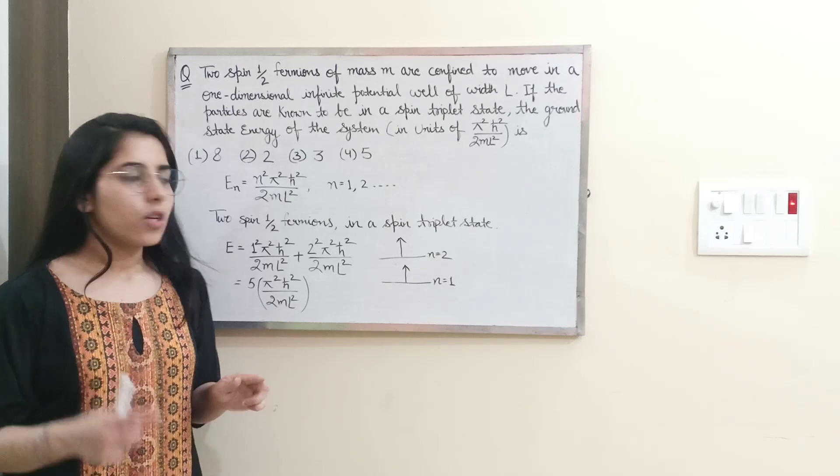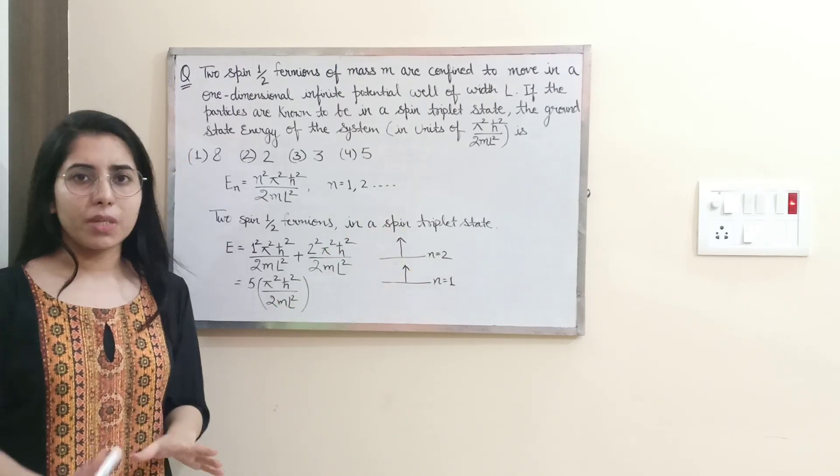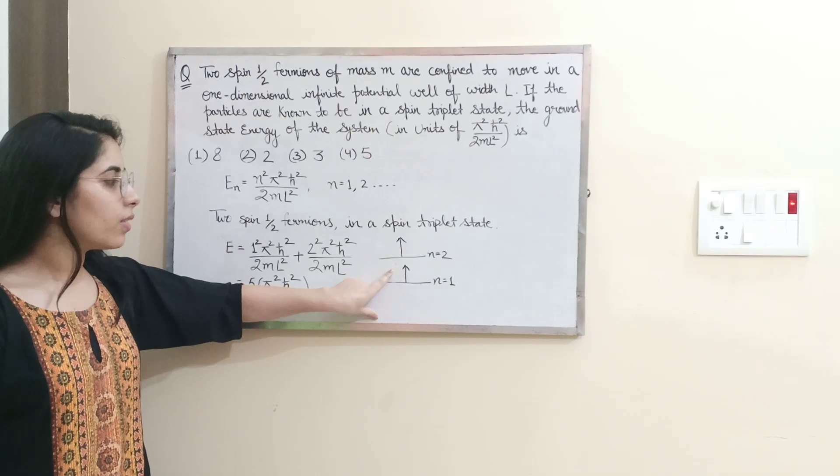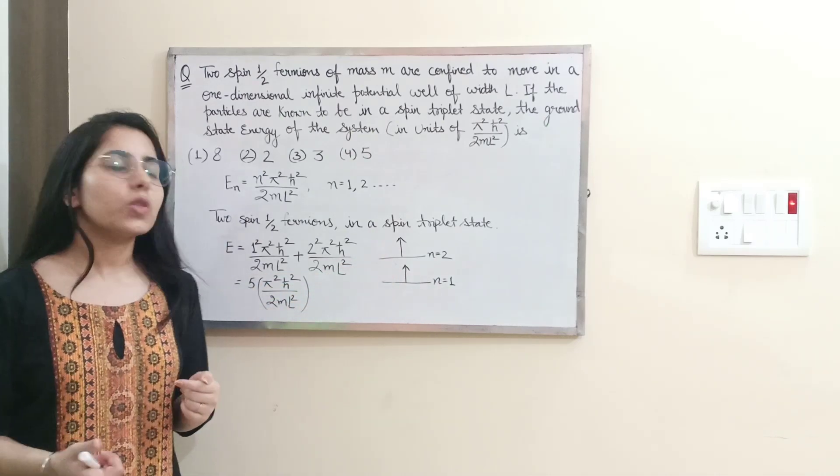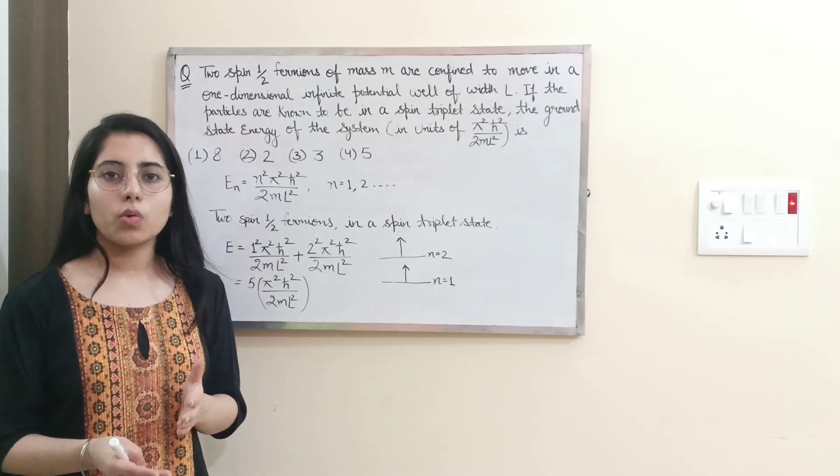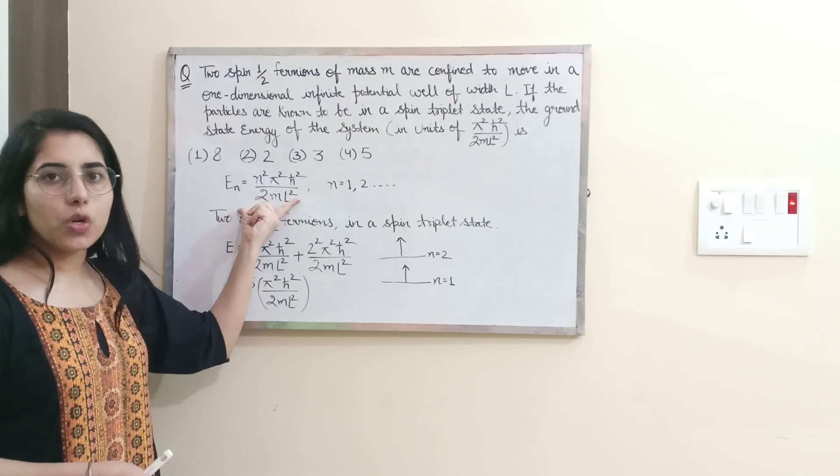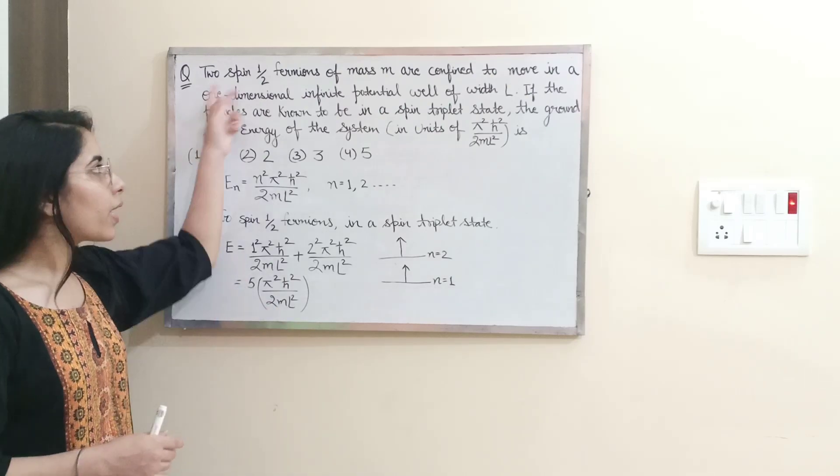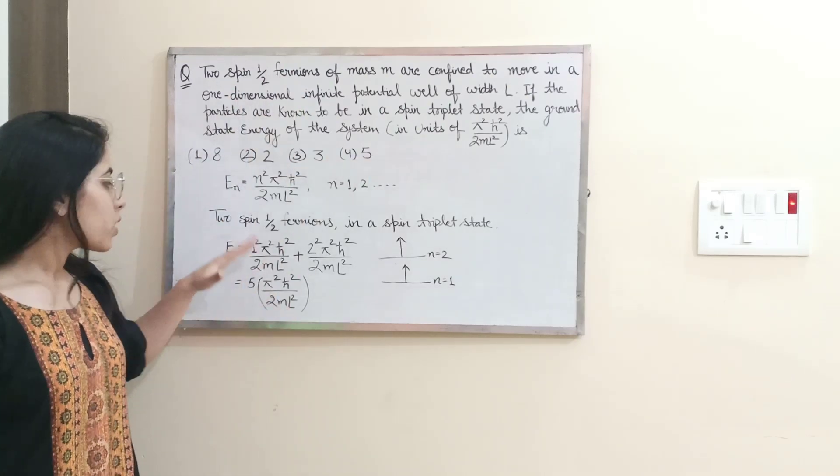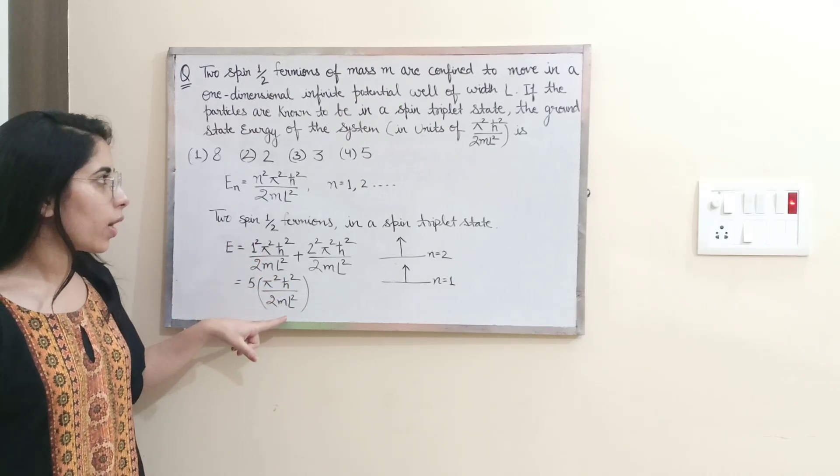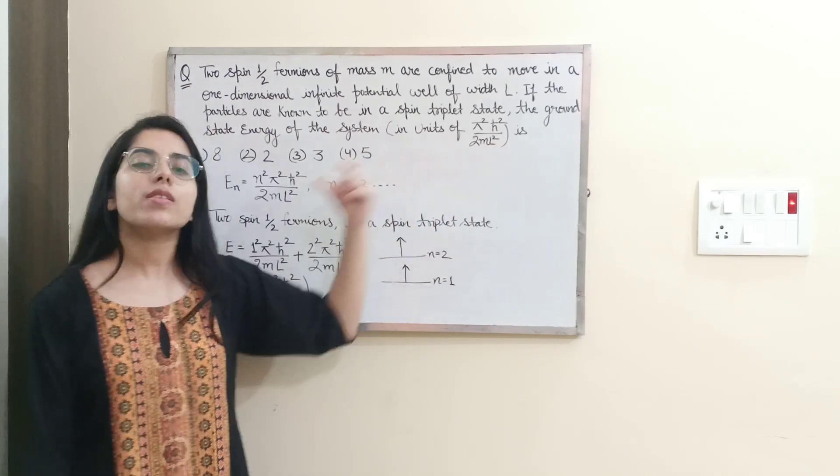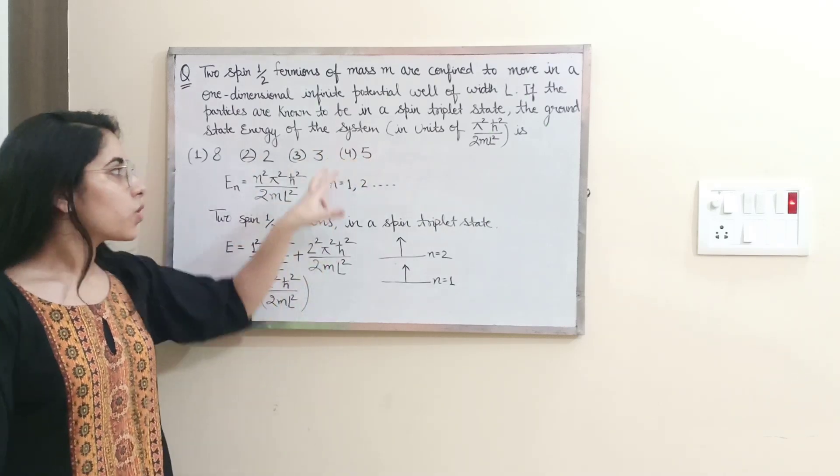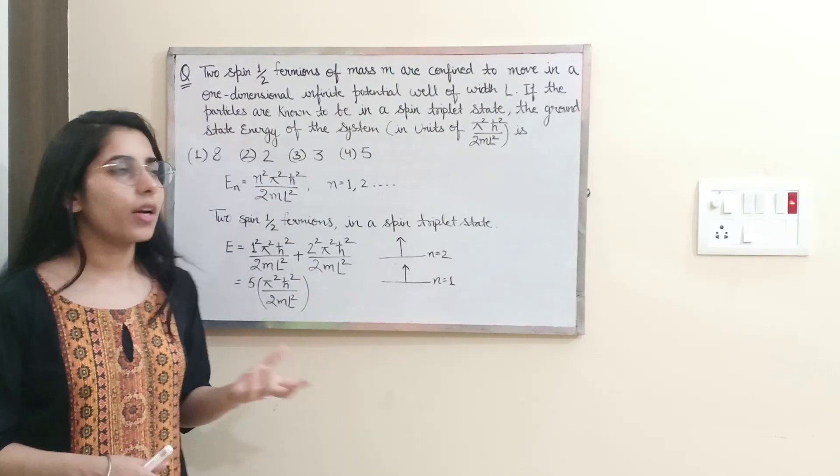That's why we have taken the different states. You can draw the potential well here. What I have done is I have mentioned the state n equals 1 and n equals 2, and the particles with their corresponding spins. If you want to know about the energy of the ground state, for n equals 1 and 2 we will write this expression of energy and add them to get the total energy of the system. We will get 5π² ℏ² upon 2ml². So in the units of this, the answer is 5, which is option 4.